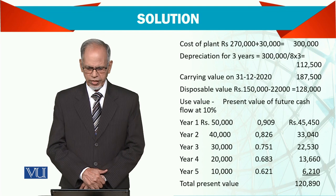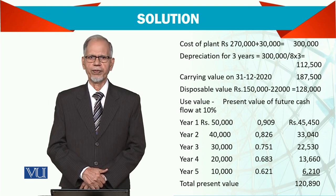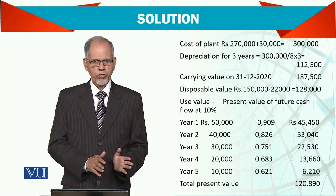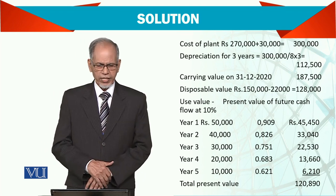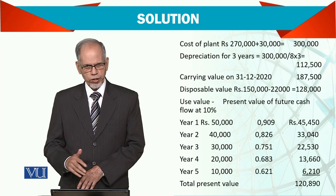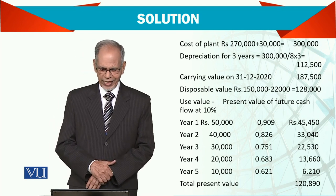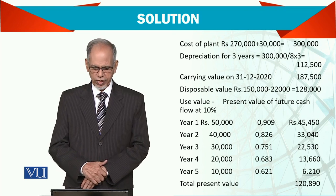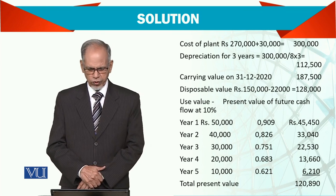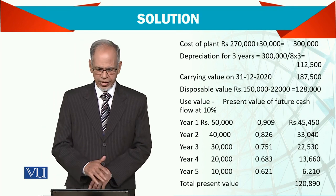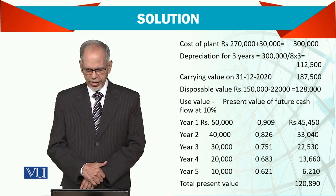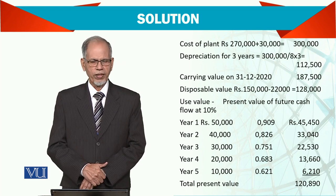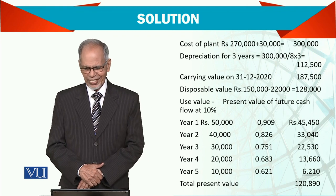So the carrying value is $187,500. The disposable value — when you want to sell it — is $150,000 minus $22,000, so the balance is $128,000. Now we need to find out the value in use as well. The cash flows for years 1 through 5 are multiplied by the discount factors, giving discounted values, and the total present value of use is $128,900.